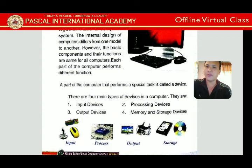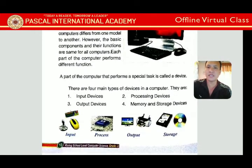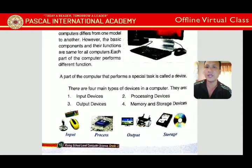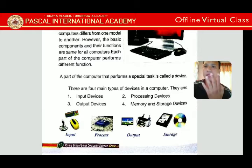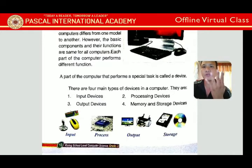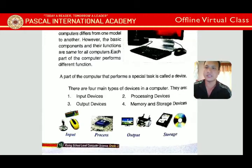A part of the computer that performs a specific task is called a device. There are four main types of devices in a computer: input device, processing device, output device, and memory and storage device.